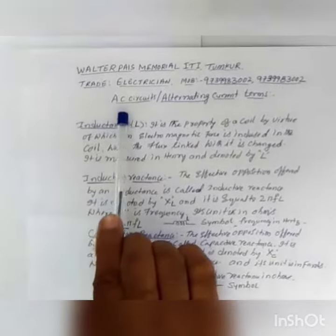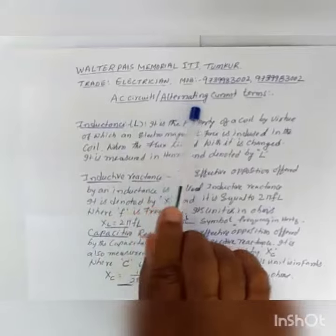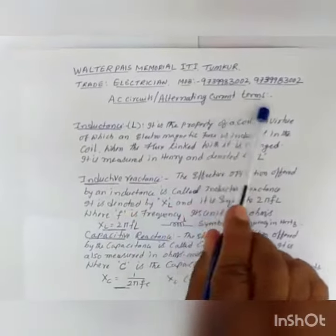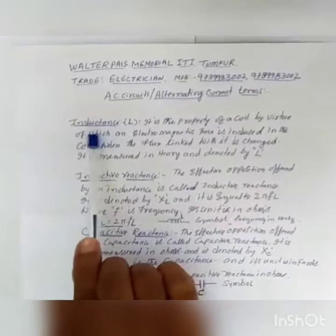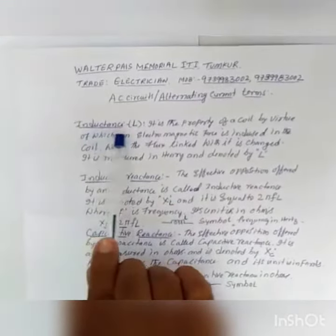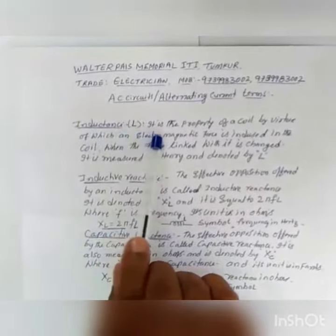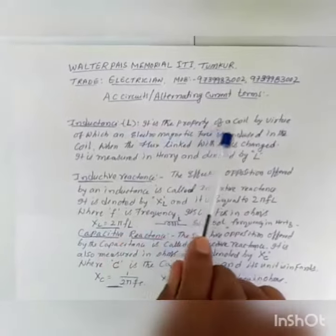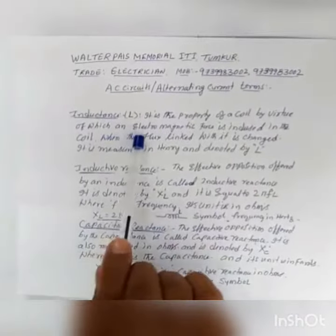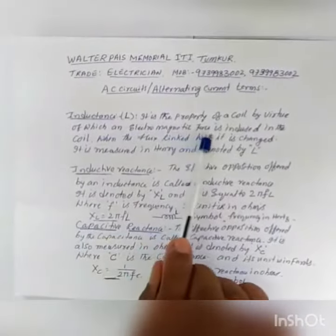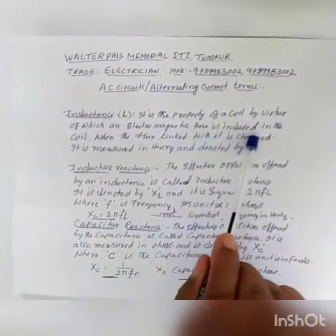Chapter S. AC Circles — Alternating Current Terms. Inductance: it is denoted as letter L. It is the property of the coil by virtue of which an electromagnetic force is induced.